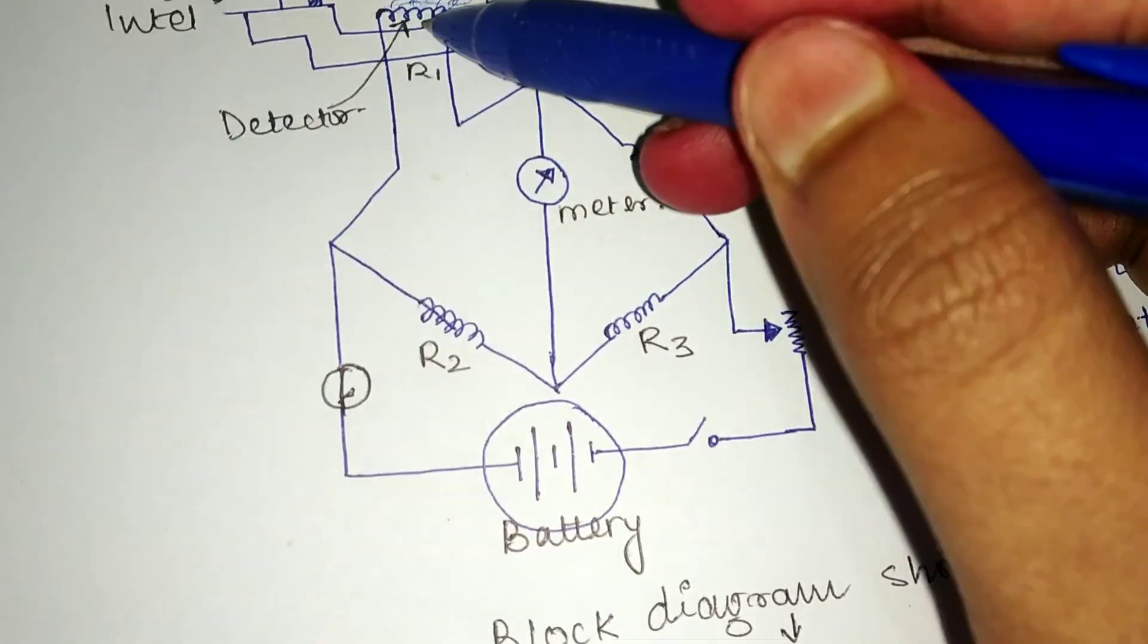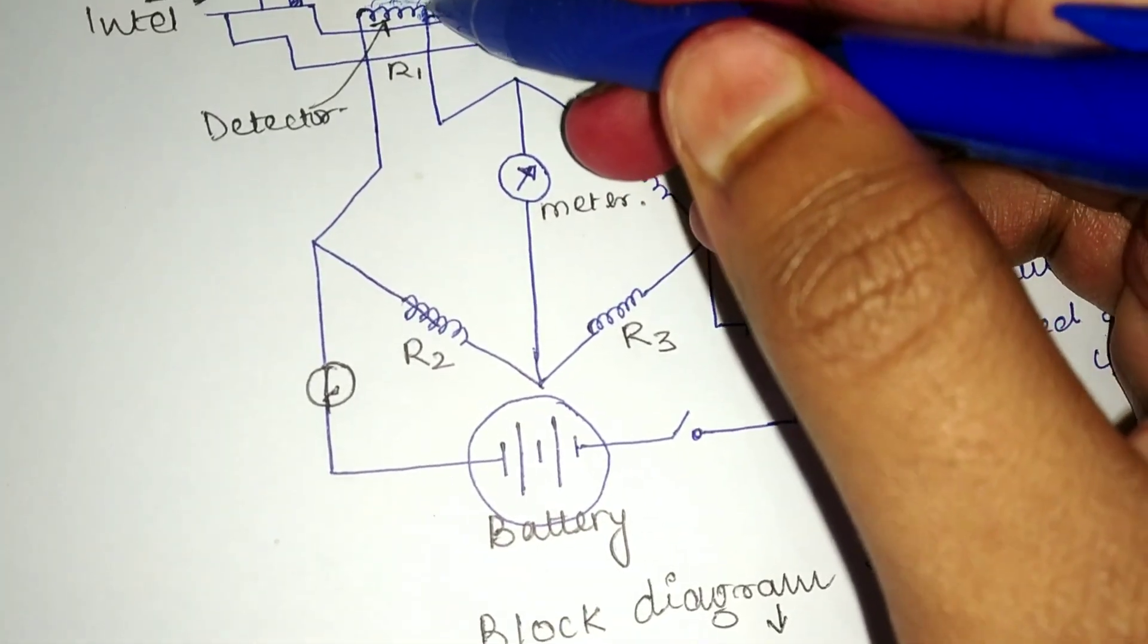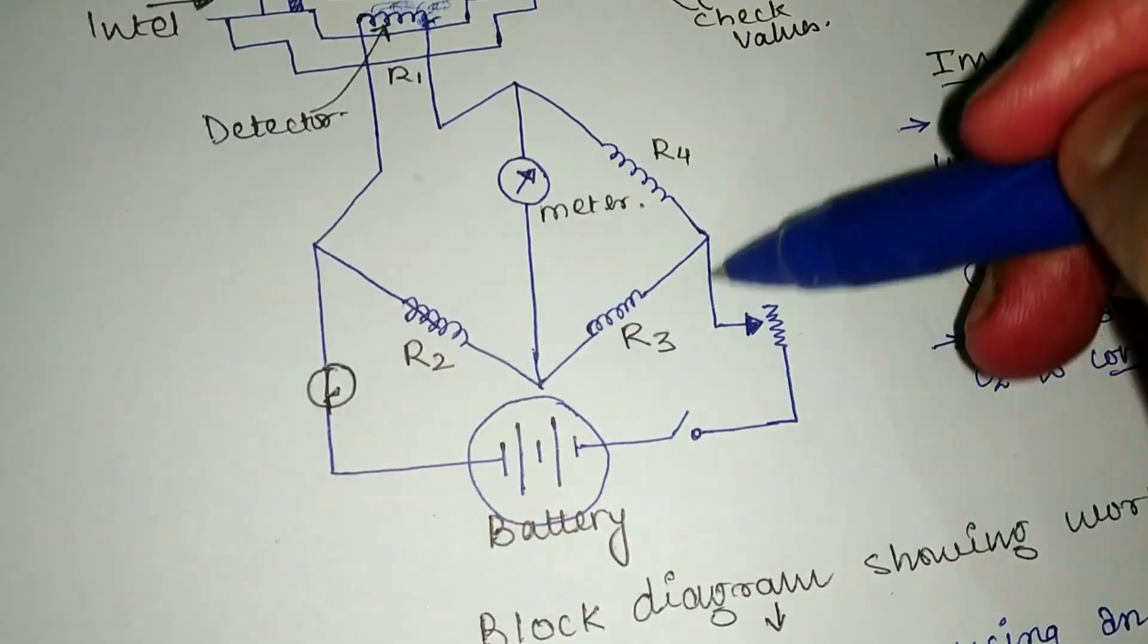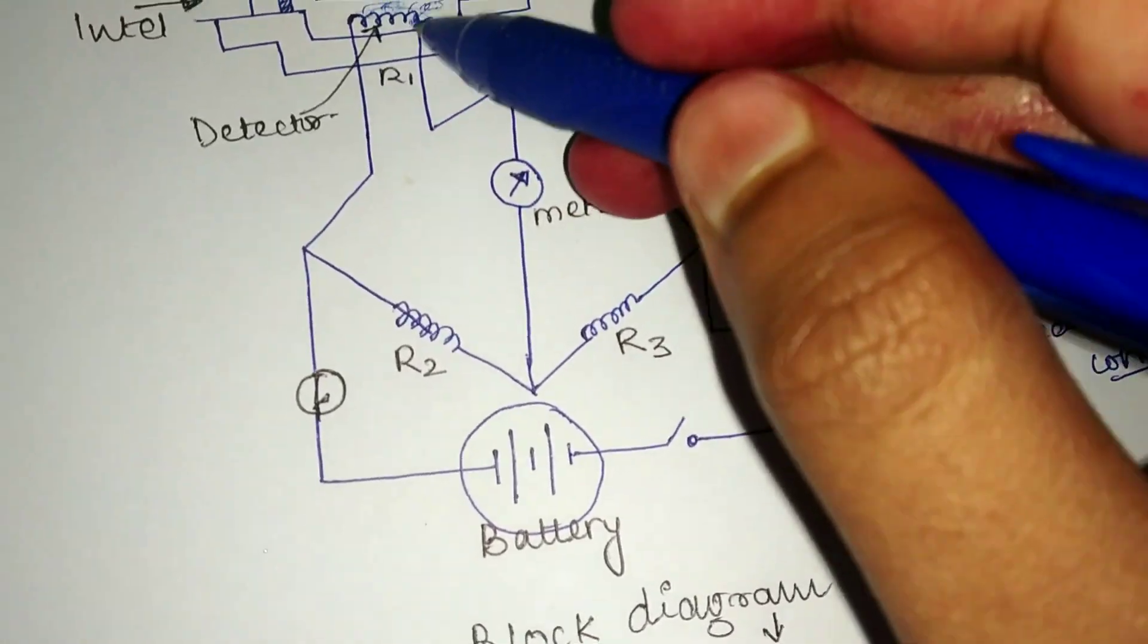Due to the increase in temperature of this filament, resistance also increases. This means resistance changes. Initially the resistance of all the resistors are equal, but now the resistance of this filament changes. Therefore this becomes unbalanced.